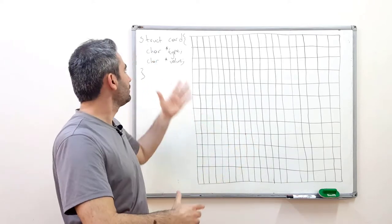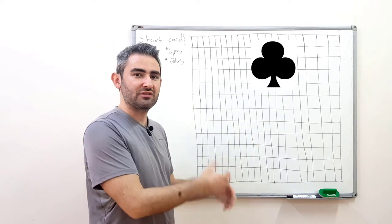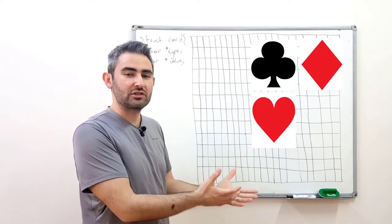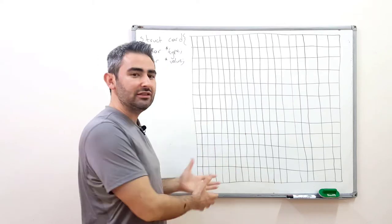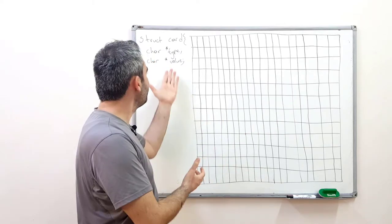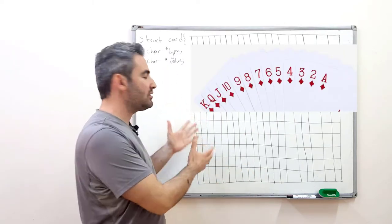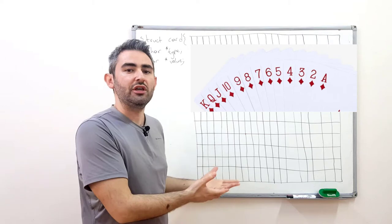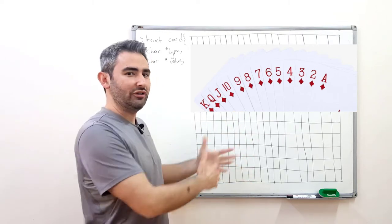One array will hold the type of the card — clubs, diamonds, hearts, or spades — and the other will hold the value of the card, like ace, two, three, jack, queen, king, or the others.